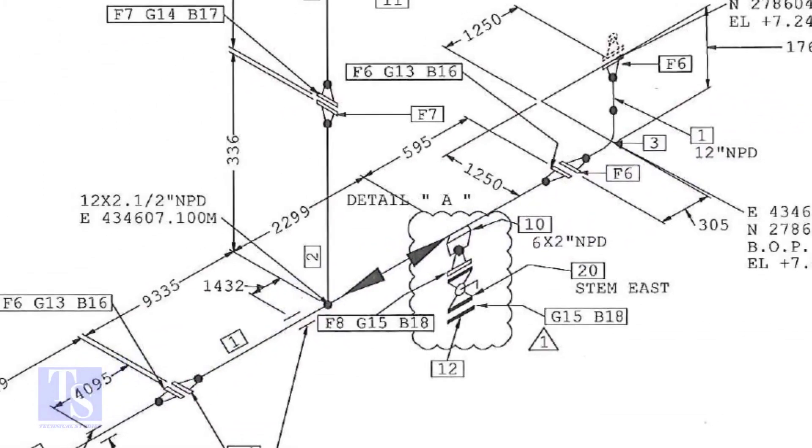The center of the weld-olet is 595mm away from the face of the flange. Now, we are going to mark this distance on a pipe with a flange fitted on it.